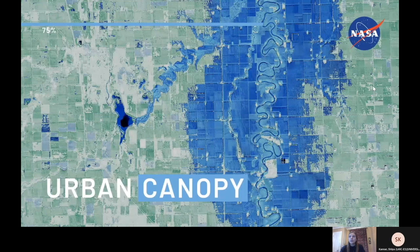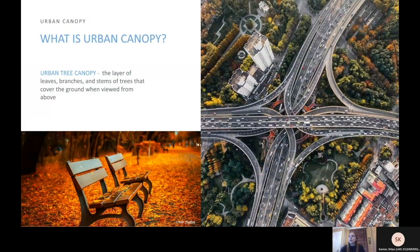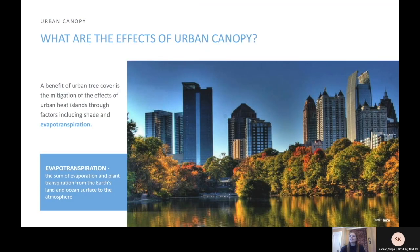Now let's look at urban canopy. Urban canopy is the layer of leaves, branches, and stems of trees that cover the ground when viewed from above. In the image to the right, you get an aerial view of an urban area, and all of the trees in the image are urban canopy. Unlike urban flooding and urban heat islands, urban canopy is actually a good thing. The biggest benefit of urban canopy is that it mitigates or reduces the effects of urban heat islands in many ways, such as by providing shade. Another way it does this is through a process called evapotranspiration, which is the sum of evaporation and plant transpiration from the Earth's land and ocean surface to the atmosphere, creating a cooling effect. Trees are not impervious surfaces — they reflect heat, which counteracts the absorption caused by urban surfaces.